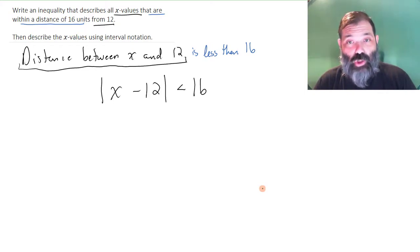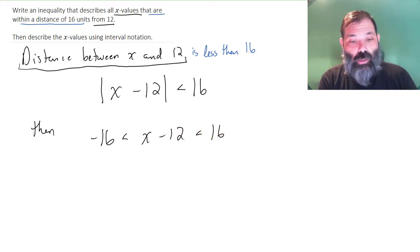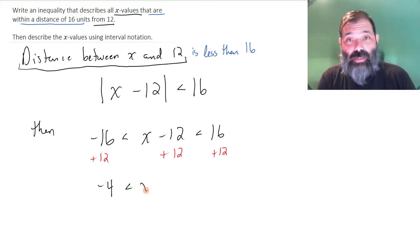The absolute value of x minus 12 is less than 16. Now to describe that using interval notation, I'll expand this absolute value inequality into a three-part inequality. So negative 16 is less than x minus 12 is less than 16, and I'll isolate x in the middle by adding 12 to all three parts of the inequality. So then negative 4 is less than x is less than 28.